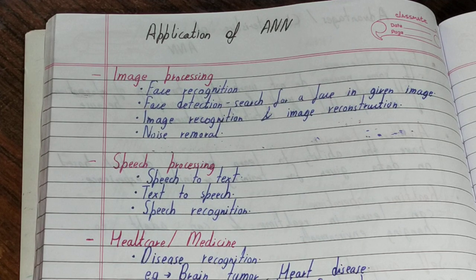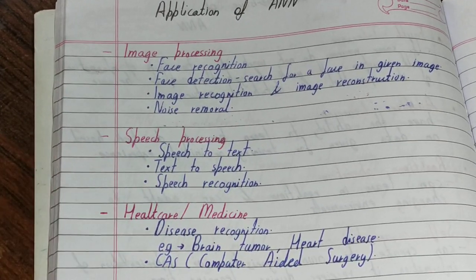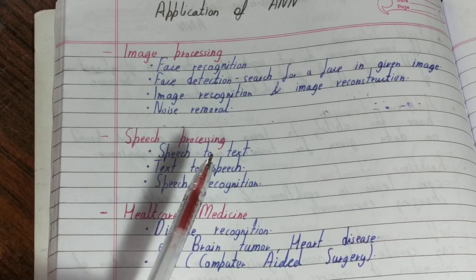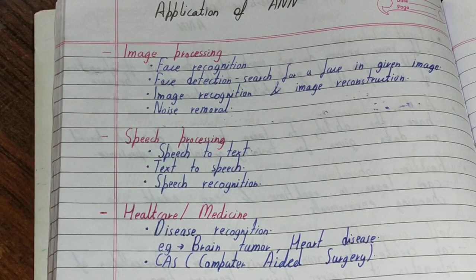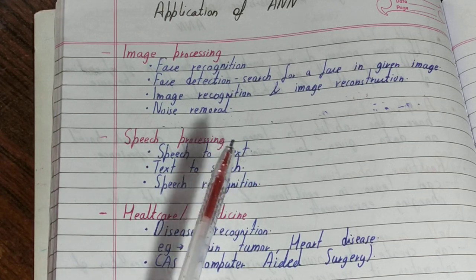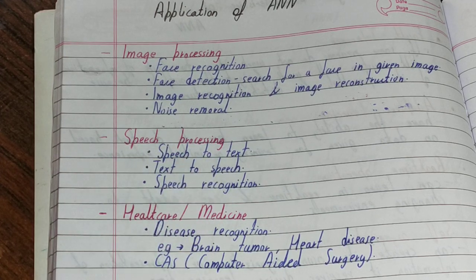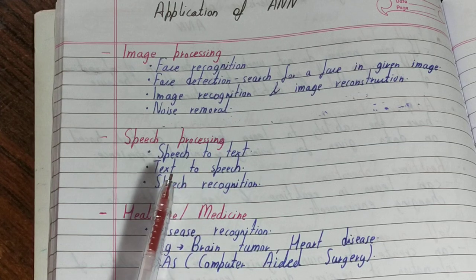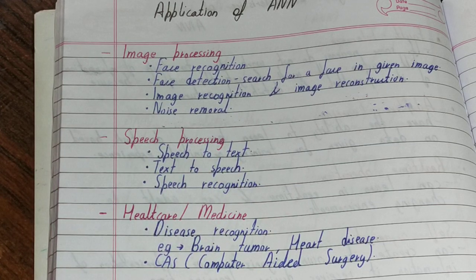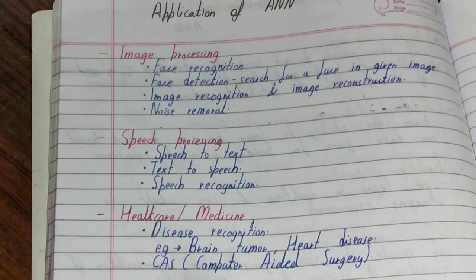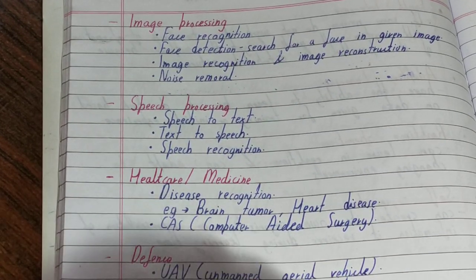Next is speech processing. Converting speech to text is a benefit provided by artificial neural networks. The most common example is your smartphone where you give a speech and it is converted into text. In the same way, text can also be converted to speech — when you ask something to your mobile, it answers you back. There is also speech recognition, which recognizes an individual's unique speech.